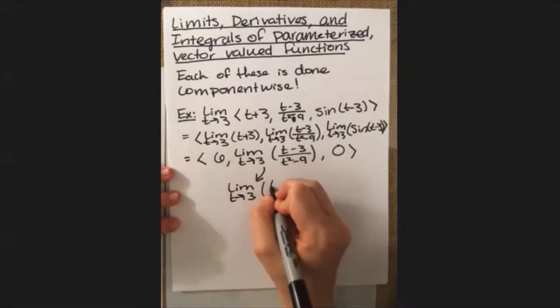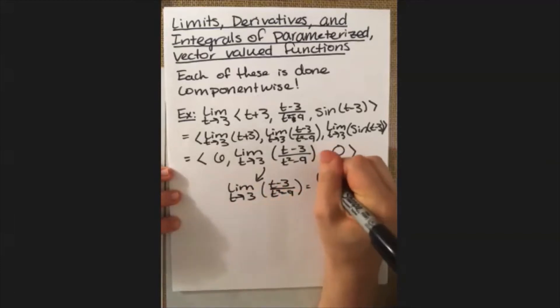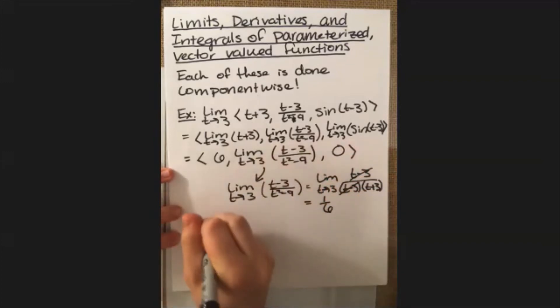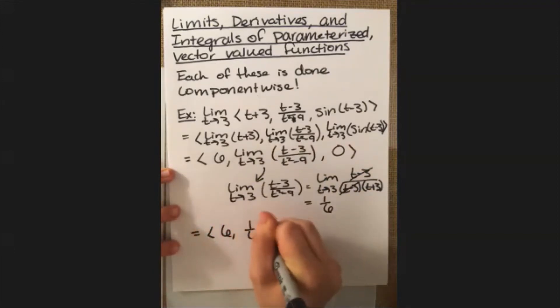We'll have t minus 3 divided by t squared minus 9 equals the limit as t approaches 3 of t minus 3 divided by t minus 3 times t plus 3. And then because there's a t minus 3 in the top and the bottom, we cancel those out, that leaves us with 1 over t plus 3. And then at that point, we can do direct substitution. So you just get 1 over 6, meaning that our final answer here is 6, 1 over 6, 0 as the limit of this guy right here as t approaches 3.